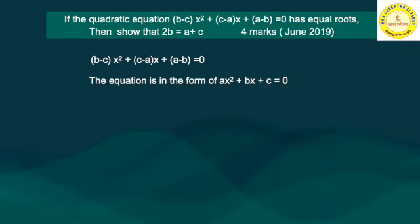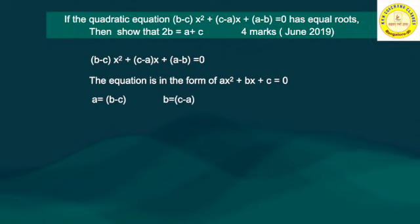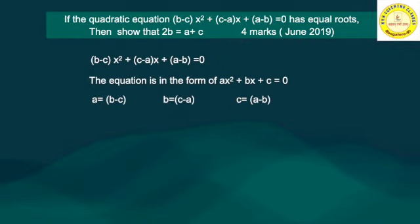Comparing the given equation to the standard form of the quadratic equation, we get the values: a equals (b minus c), which is the coefficient of x²; b equals (c minus a), which is the coefficient of x; and c equals (a minus b), which is the constant term. This comparison step is complete.